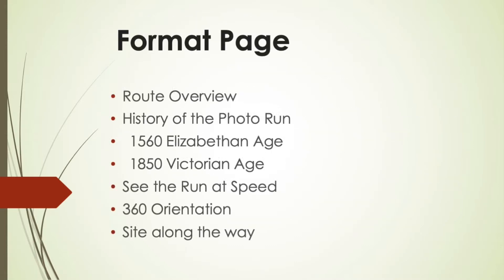The general format is that we start off with a history section looking at this part of London in 1560, which is the Tudor times when Henry VIII and Queen Elizabeth I were around, as well as Shakespeare, and then we look at it in 1850, which is the Victorian era where Dickens and Darwin were around, and it was almost at the height of the British Empire.